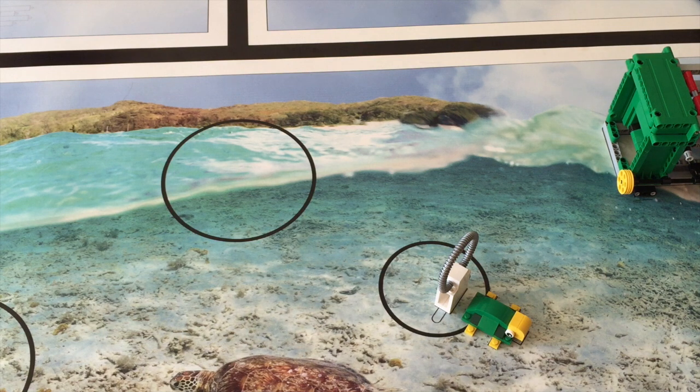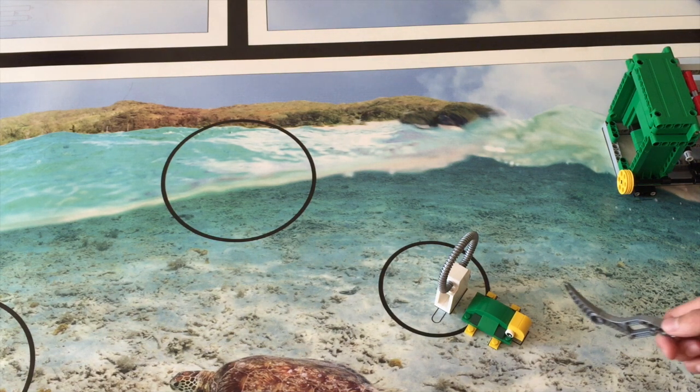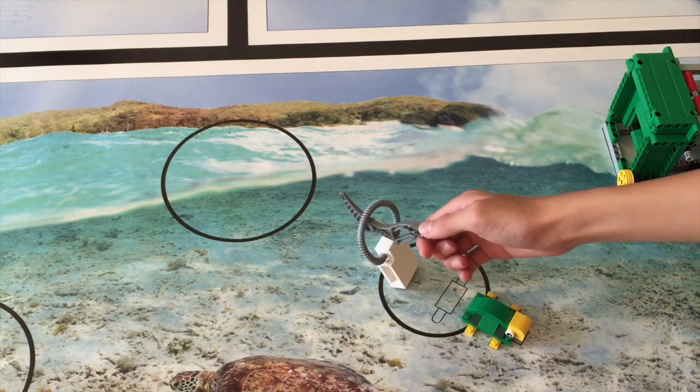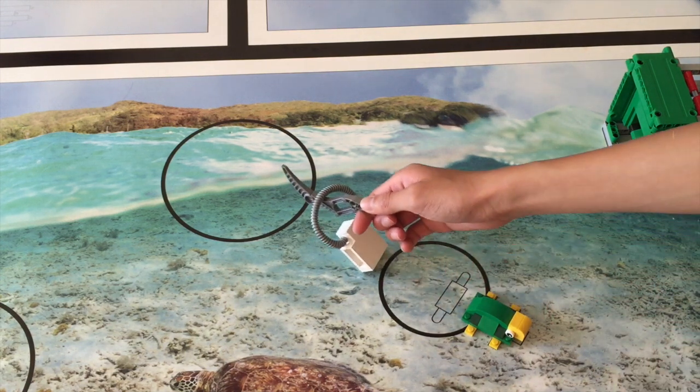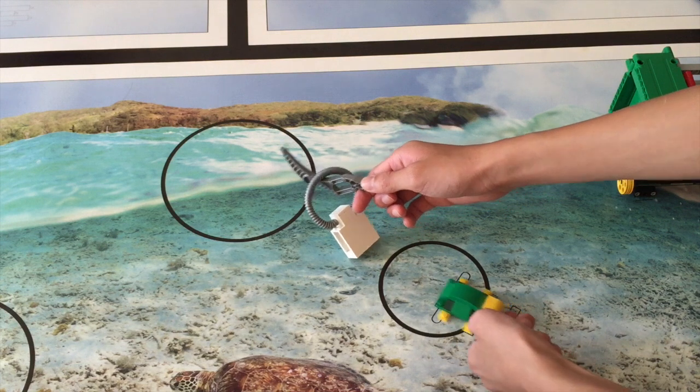For the animal part of this mission, you can have an arm connected to the robot that goes forward and traps the plastic bag, taking it away with the robot. Meanwhile, the robot can push the turtle into the circle.